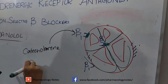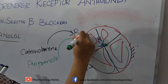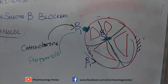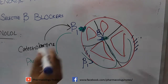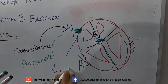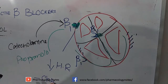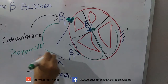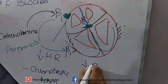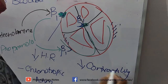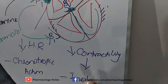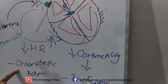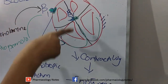Propranolol, as a beta blocker, acts on these receptors and blocks them. It does not allow automaticity or pacemaker activity of the sinoatrial node, thus decreasing heart rate — this is negative chronotropic action. When propranolol acts on the myocardium, it causes decreased contractility — negative inotropic action. It also suppresses the SA node and AV node.